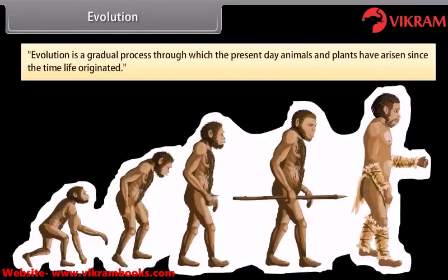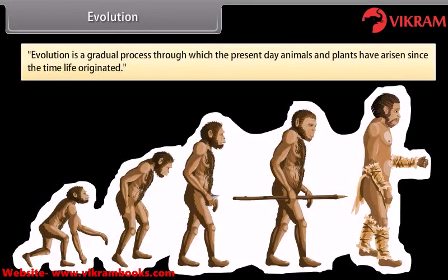Evolution is a gradual process through which the present-day animals and plants have arisen since the time life originated.